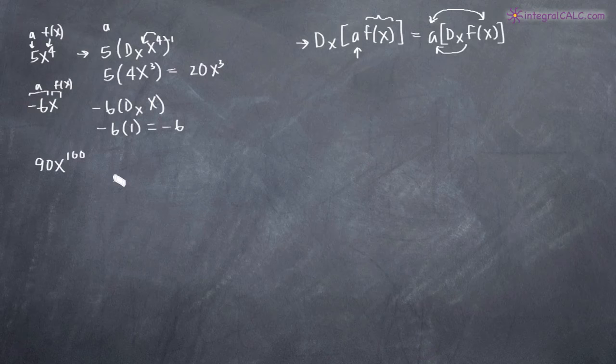If we look at 90 times x raised to the 100, we can factor out the 90 because this part right here is a according to our formula and this x^100 here is f(x).